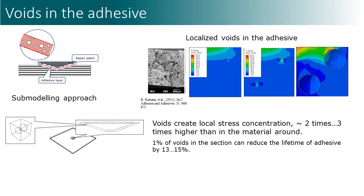A critical factor for the repair quality is the availability of voids in the adhesive layer. We modeled the voids using the sub-modeling technique. It was observed that voids create local stress concentration in the adhesives up to two times higher than in the material around. If there are voids in the highly stressed region, this will shorten the post-repair lifetime.